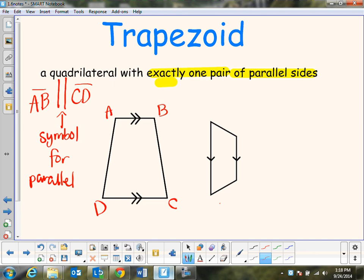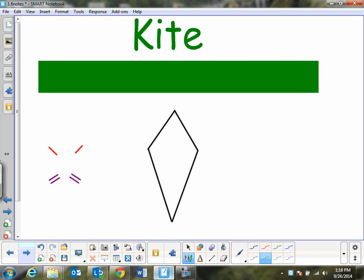And then of course to label the picture, make sure you do the little arrow. Next one is the kite.